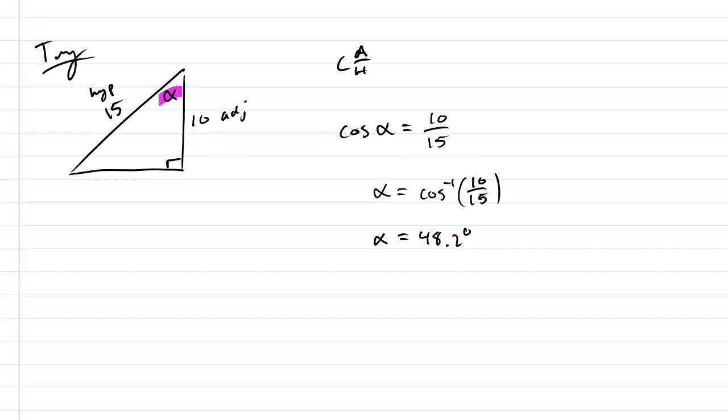Now, if I wanted to, if I knew that this is 48.2 degrees, I could figure out the other angle, theta. Just remember that theta plus alpha plus the right angle, well the three angles of a triangle should equal 180 degrees, right?